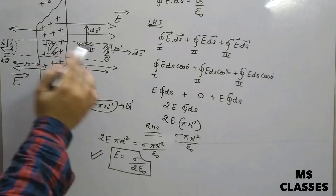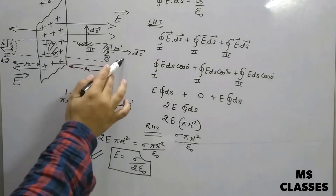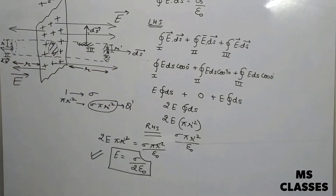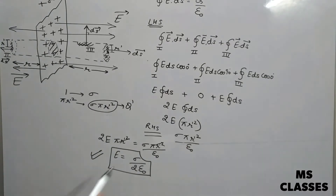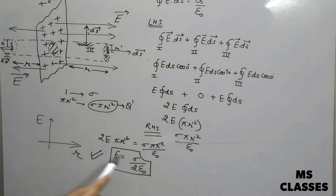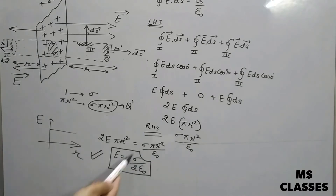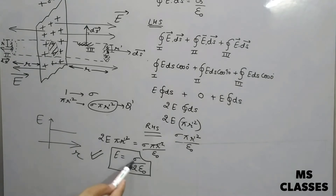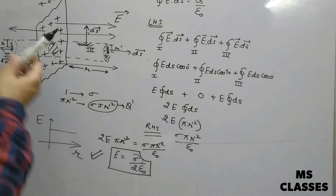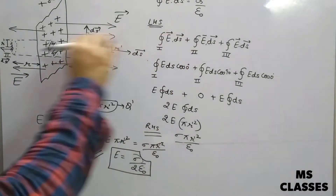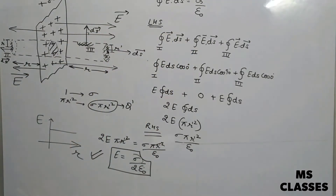So this is the expression for finding the electric field at any point — you can take the point anywhere on either side of the sheet. If you are asked about the graph of electric field vs. distance for a thin plane sheet, the electric field is constant because it is independent of distance. It depends on sigma and the nature of the medium. If sigma is positive, the field is radially outward; if sigma is negative, the field lines are radially inward.